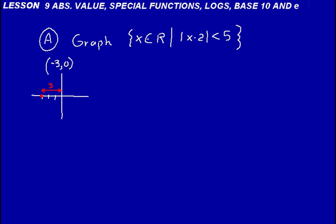So that's what absolute value is about. Absolute value, you can understand it by thinking about a distance. Now look at this problem. I want you to graph x, where x is a set of real numbers such that the absolute value of x minus 2 is less than 5. Graph that on a number line, not on a Cartesian coordinate system — just on a single x-axis.